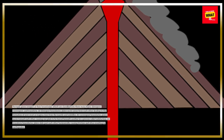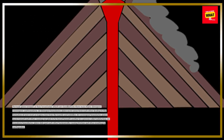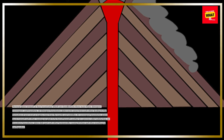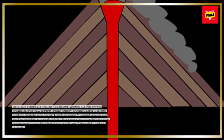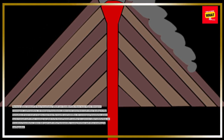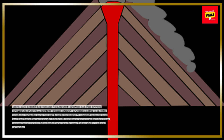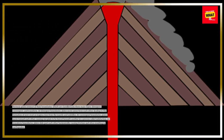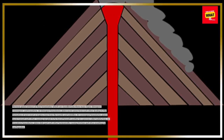At convergent boundaries, plates move toward each other, causing one plate to be forced beneath another in a process called subduction. At transform boundaries, plates slide past each other horizontally, causing friction and often resulting in earthquakes.